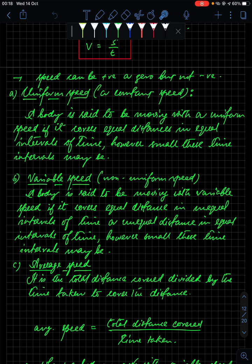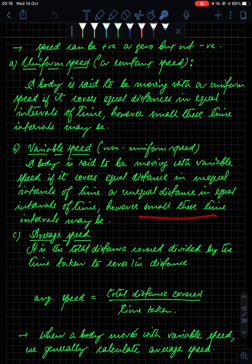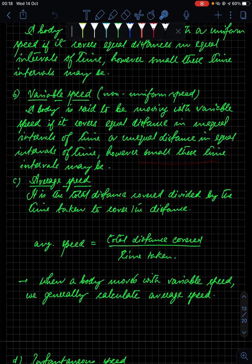A body is said to move with variable speed if it covers equal distances in unequal intervals of time, or unequal distances in equal intervals of time, however small those time intervals may be. Average speed is the total distance covered divided by the time taken.